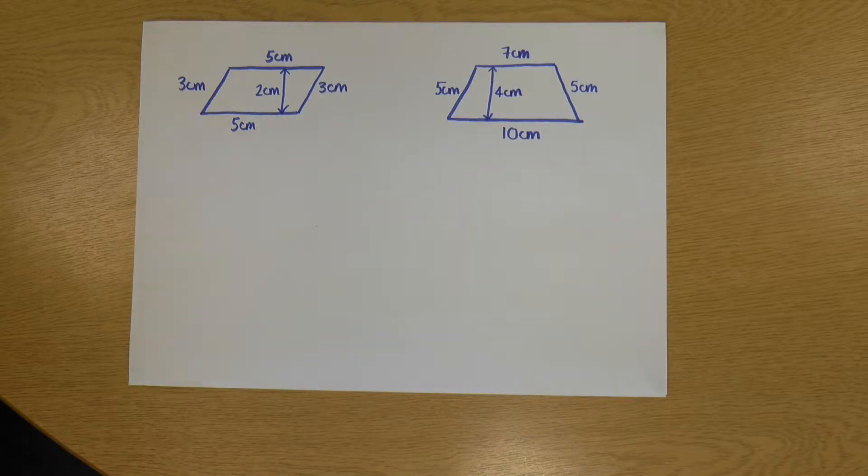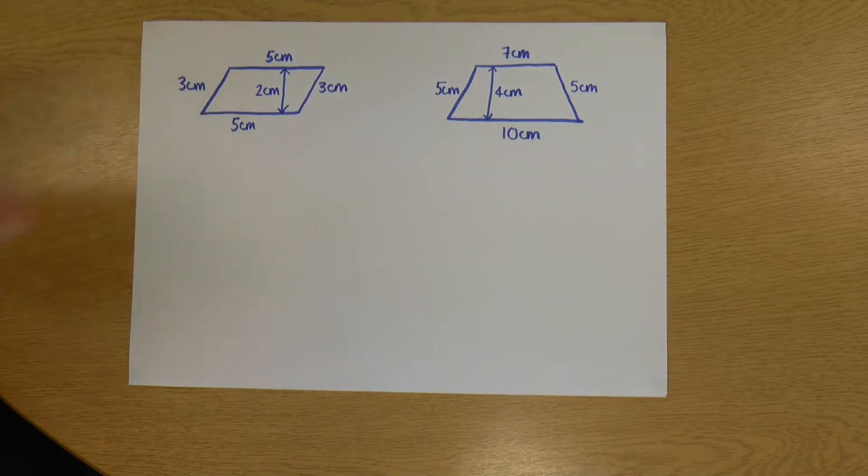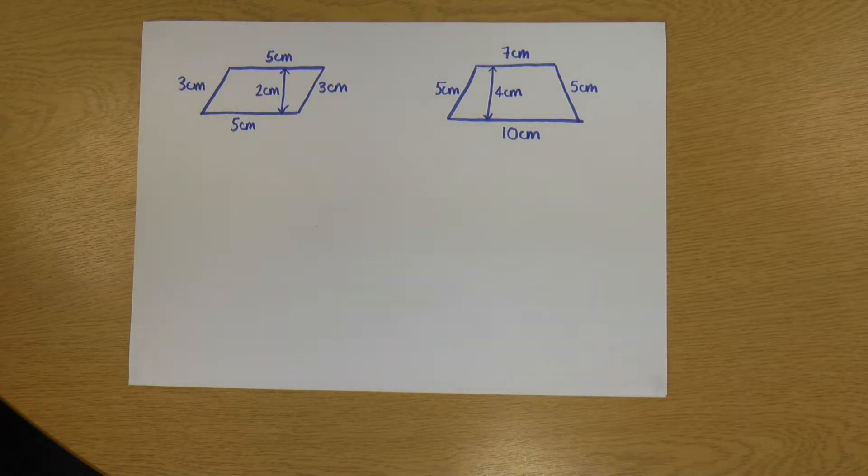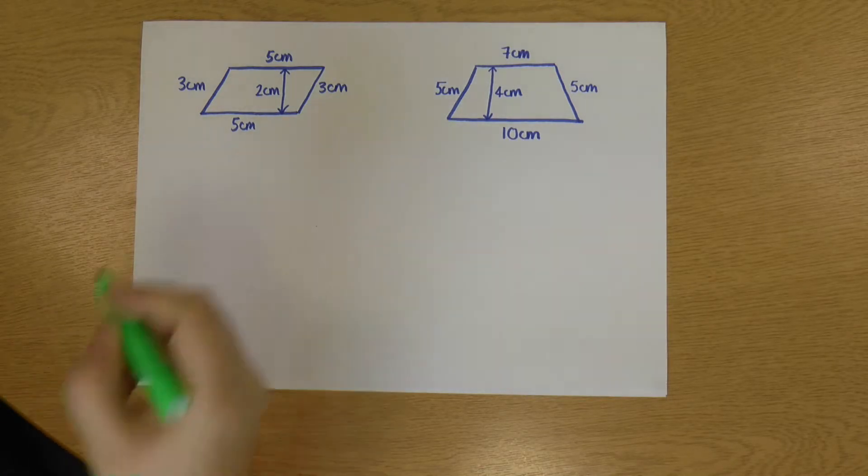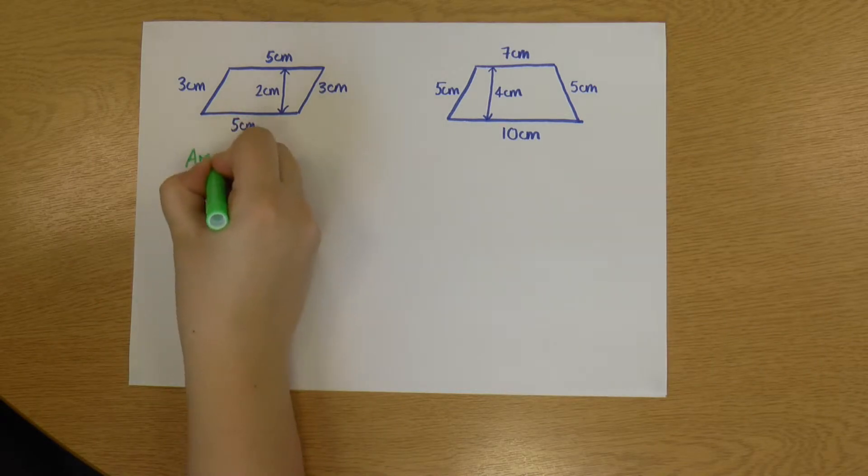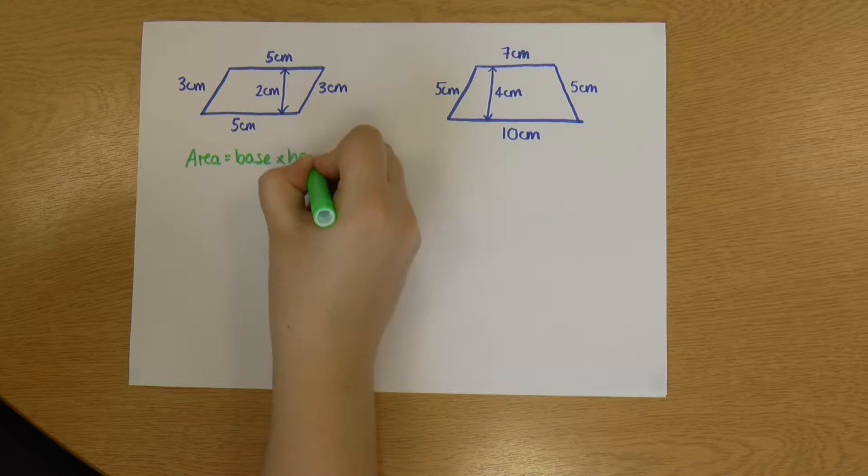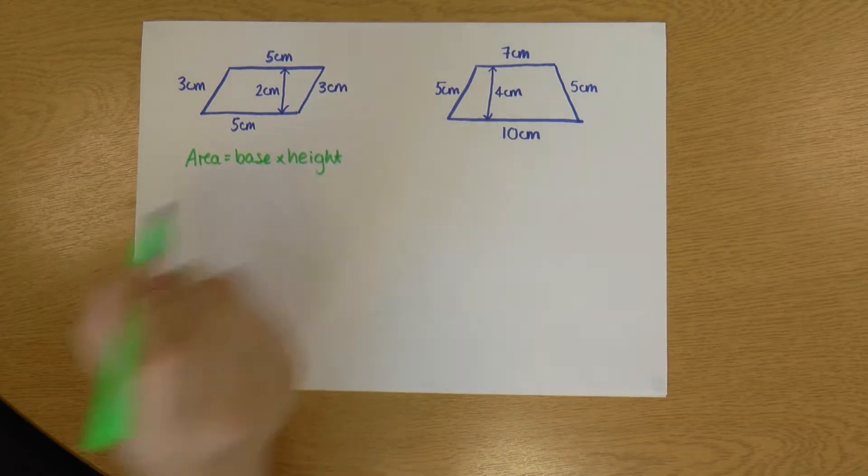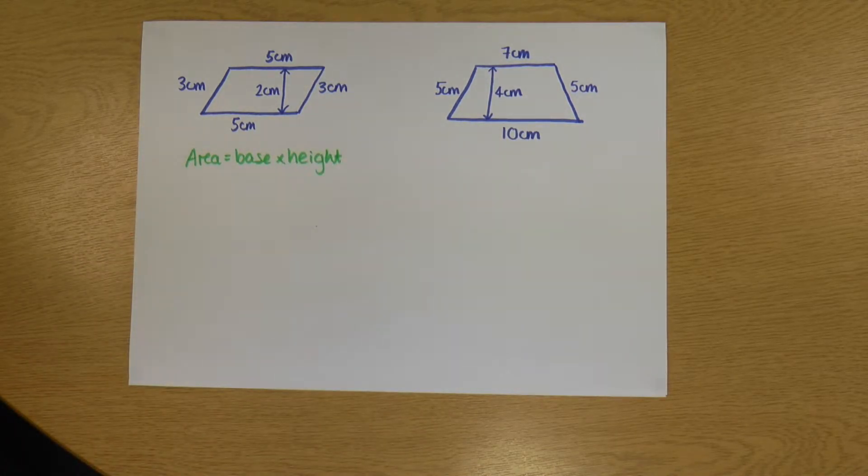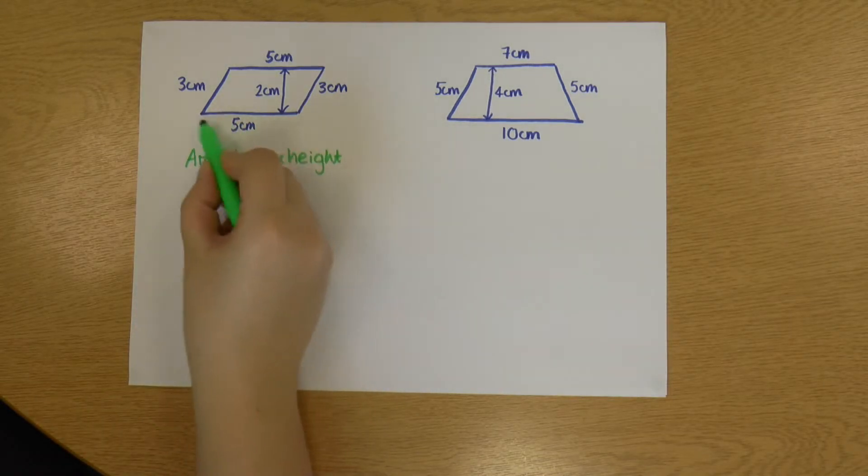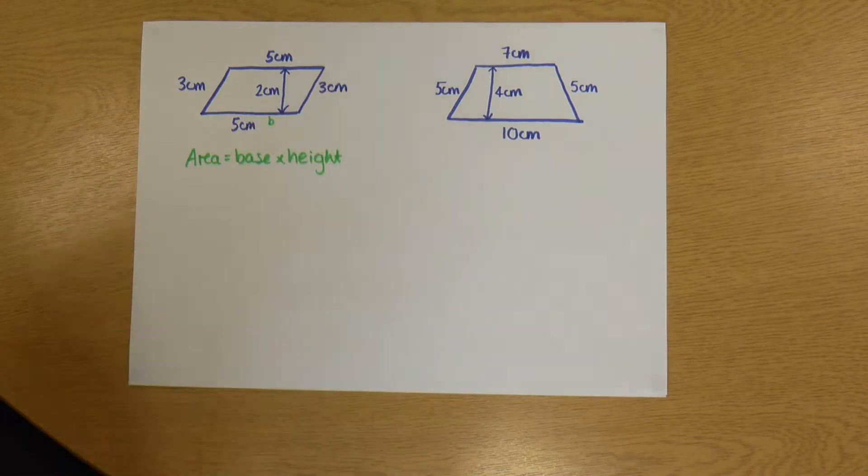Now area is where these become a little bit different. I have on my left-hand side my parallelogram. As I mentioned in my last video, when we're finding the area of a parallelogram, it's just base times height. It works exactly the same way as our rectangles do. The base is the length of the bottom of the shape. So this is my base.